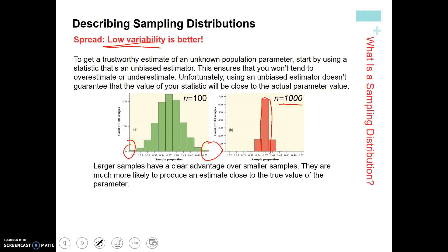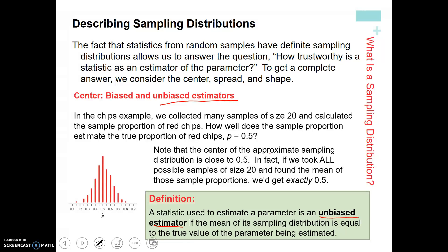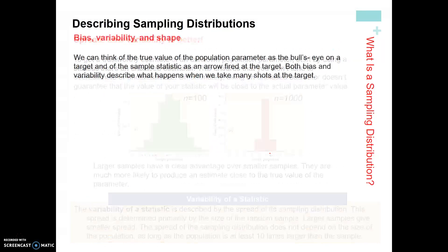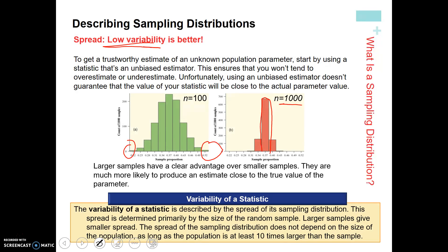So more samples, lower variability. Lower variability, the closer it is to the actual parameter, so it's better for us, as long as we didn't have a biased sample. And so that's the idea of this variability statistic, which describes the sampling distribution. And again, larger sample size, smaller spread, which makes complete sense. And the sampling distribution shouldn't depend on the population as long as the population is at least 10 times the sample size. So it really doesn't matter how big the population is. It more matters how many times you're taking the sample to get closer to the parameter.